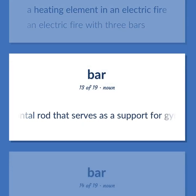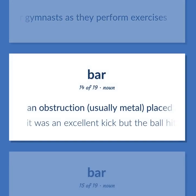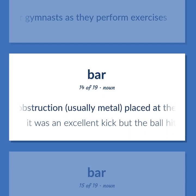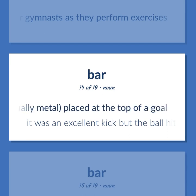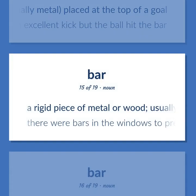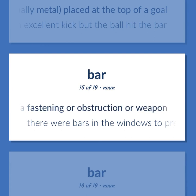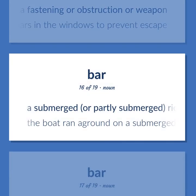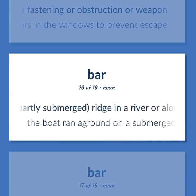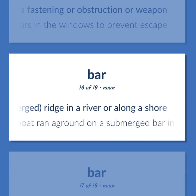Bar: a horizontal rod that serves as a support for gymnasts as they perform exercises. An obstruction, usually metal, placed at the top of a goal — 'It was an excellent kick but the ball hit the bar.' A rigid piece of metal or wood, usually used as a fastening or obstruction or weapon — 'There were bars in the windows to prevent escape.' A submerged, or partly submerged, ridge in a river or along a shore — 'The boat ran aground on a submerged bar in the river.'